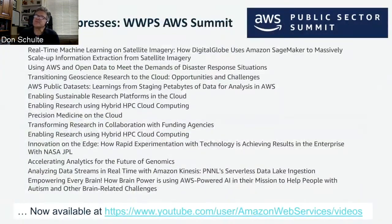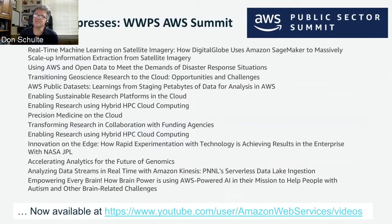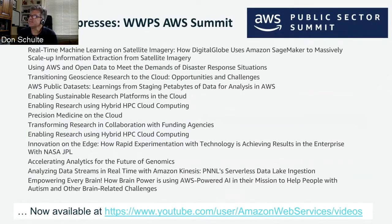Another example hot off the press — I encourage anybody to go look at the reInvent conference happening the last week of November into December. At the AWS Public Sector Summit this summer, there were many customer presentations running the gamut from machine learning, which is obviously a big topic, to life sciences and precision medicine, to what NASA is doing with AWS, to PNNL, Clemson, earth sciences, geoscience, and all kinds of different areas. This gives you a broad spectrum of what we're doing and correlates very well into the Science Gateways Community Institute community, which also covers such a broad spectrum.